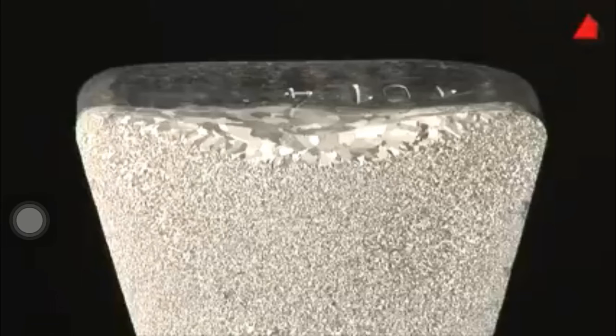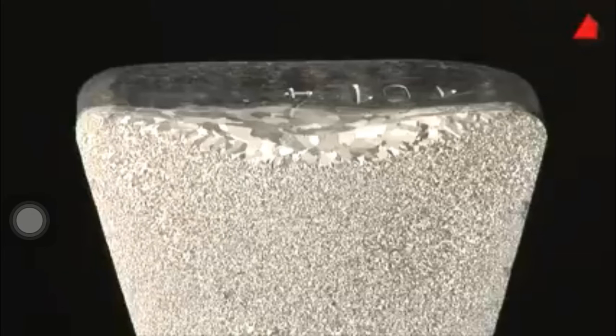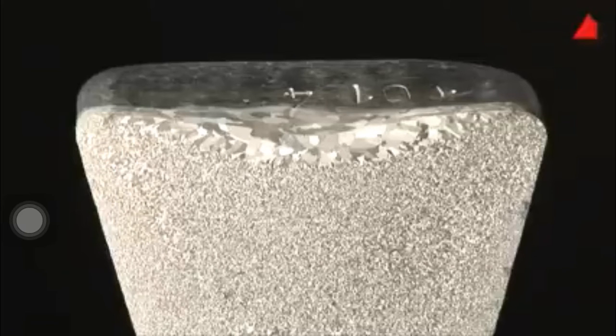But why are the grains only visible after etching? The reason for this is that the etchant structures the material grains on the surface according to their crystal orientation. Experts call it grain contrast etching.